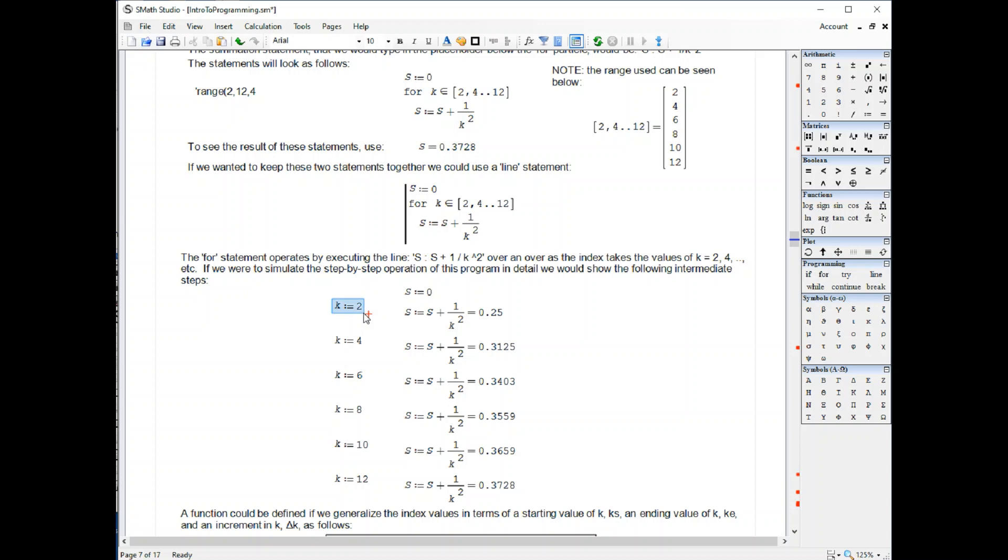What's happening here is the following way. We start with s equals 0, then k takes the value of 2, we add s 1 over k squared, and we get 0.25. k now takes the value of 4, we add 1 over 4 squared, and we get 0.3125.